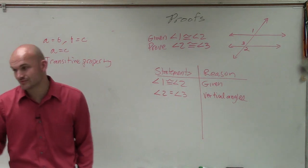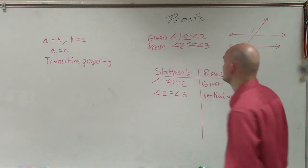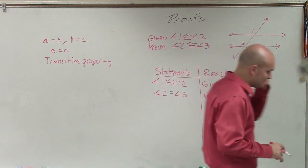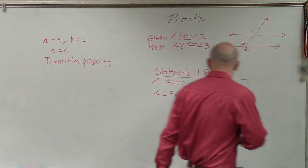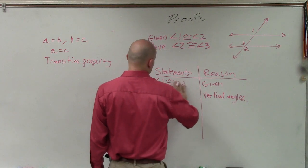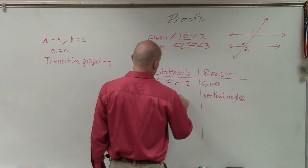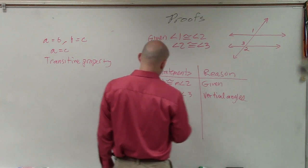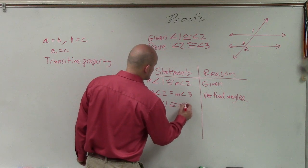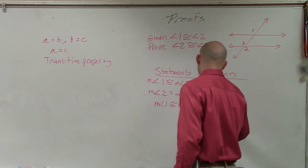And also, you could have just used corresponding angles really quickly as well. So therefore, you can now say that if I have those are equal to each other, the measure of angle one is congruent to the measure of angle three. And those are because the transitive property.